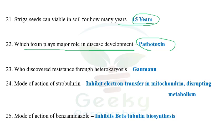The next question: who discovered resistance through heterokaryosis? Government discovered resistance through heterokaryosis. The next question: the mode of action of strobilurin fungicides. Strobilurin group fungicides are a new generation of fungicides, first released in the market around 2016. They are isolated from a mushroom called Strobilurus tenacellus. The mode of action of strobilurin fungicides inhibits electron transfer in mitochondria, disrupting metabolism.